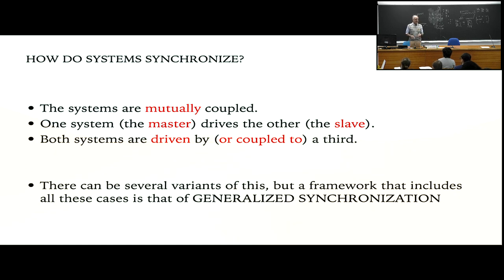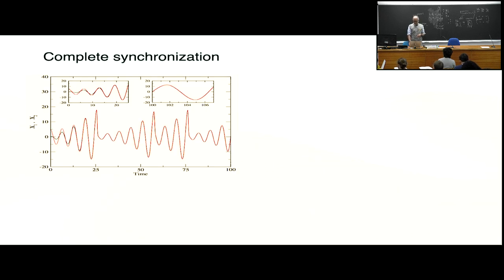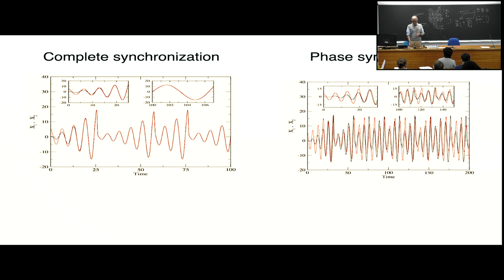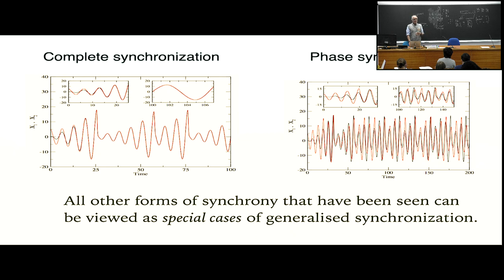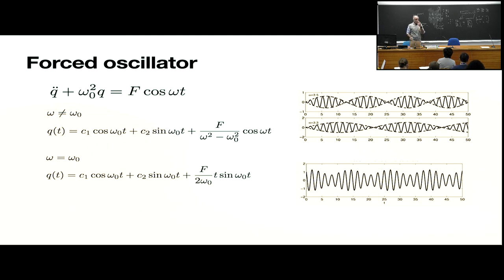There is a framework for looking at all these together — it's called generalized synchronization. It encompasses complete synchronization, phase synchronization, lag synchrony (things exactly the same but at a small difference in time), relay synchrony, and many other variations. Force systems are a very fruitful way of thinking in terms of different types of synchrony.